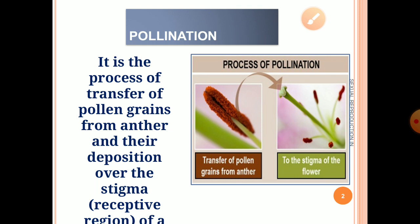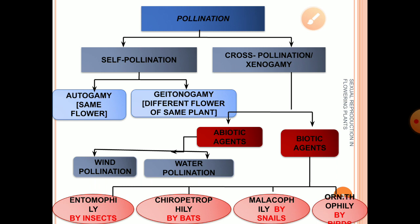Pollinating agents may or may not be required in this process. On the basis of different types of plants and depending on the source of pollen, there are different kinds of pollination. Pollination can be categorized into two broad categories: first is self-pollination and second is cross-pollination.